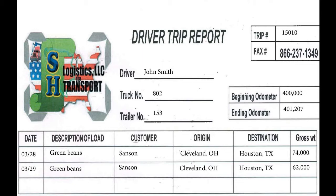If you have a load that has a final destination in Houston, Texas, but you know that there is another drop-off in Nashville, Tennessee, your destination is going to be Houston, Texas. Your first line will display the information as follows: the date that you are picking up, which in this case will be the 28th of March; the description of what you are hauling, which in this case is green beans; the origin of the load, which in this case will be Cleveland, Ohio; and the destination — since you have two drop-off locations, your first destination is still going to be Houston, Texas. The gross weight for this demonstration is going to be 74,000 pounds. The next line will demonstrate your second drop-off. For this line, the date is the 29th of March and the load is still green beans. The customer is still Sanson. The origin is still Cleveland, Ohio, and the destination is Houston, Texas — your final drop. The gross weight is 62,000 pounds. This will complete the first section of the driver trip report envelope.